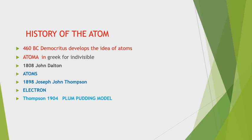History of the Atom. In 460 B.C., Democritus developed the idea of atoms. He ground up materials in his pestle and mortar until he had reduced them to smaller and smaller particles, which he called 'Atoma.' Atoma in Greek means indivisible.